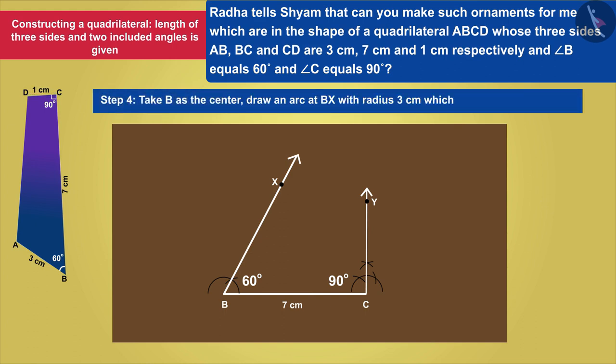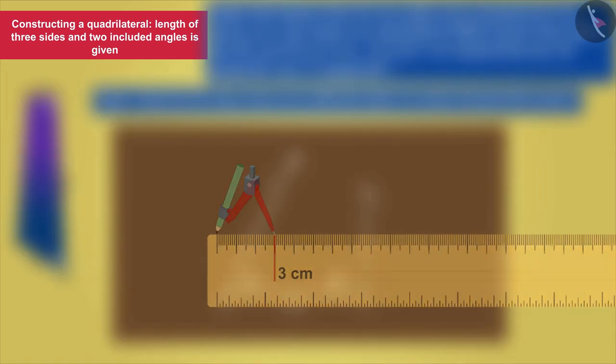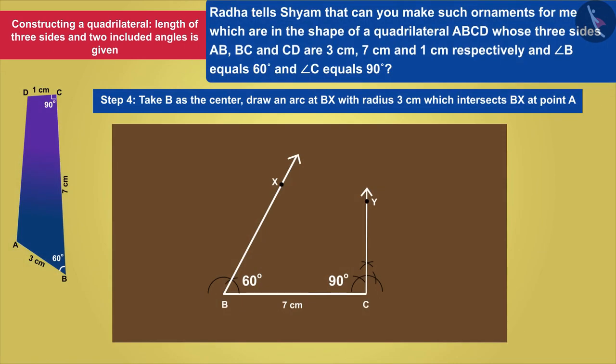Taking B as the center, he takes an arc at BX with radius 3 cm, which intersects BX at point A.